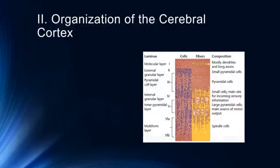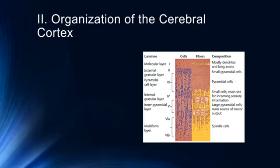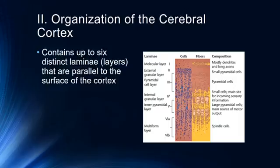The cerebral cortex is organized into six primary layers, or laminae. These include the multi-form layer, the inner pyramidal layer, the inner granular layer, the pyramidal cell layer, the external granular layer, and the molecular layer. The molecular layer is mostly dendrites and long axons — the ingoing and outgoing communication layer. The external granular layer consists of smaller pyramidal cells, while the pyramidal cell layer has larger ones. The internal granular layer is the main site for incoming sensory information, the inner pyramidal layer is the main source of motor output, and the multi-form layer contains spindle cells.